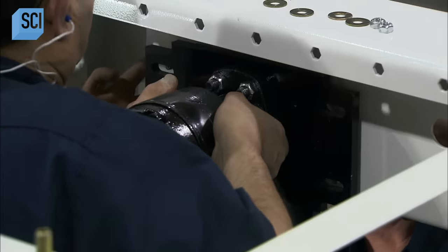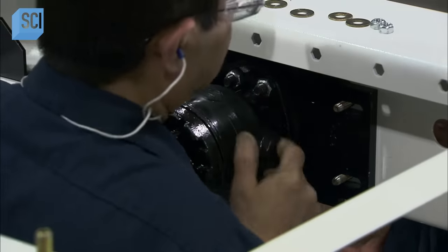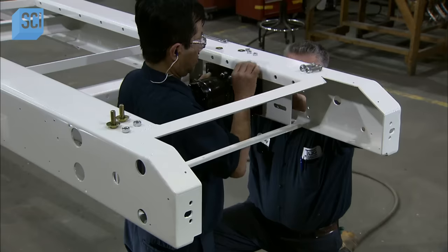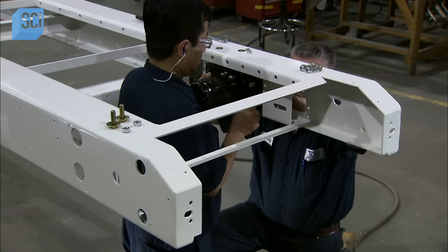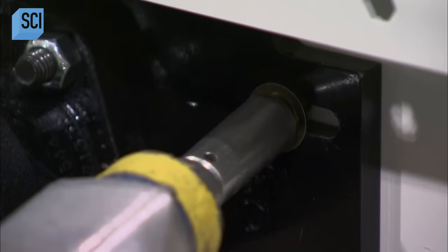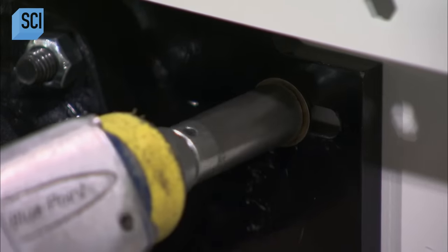Once the paint dries, assembly can resume. On the conveyor frame, they install the motor which drives the belt. There are two options available. This hydraulic motor, powered by the vehicle's engine, or an electric motor, powered by battery.